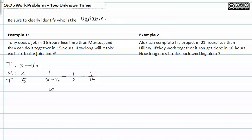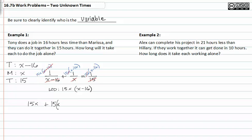We can now find the LCD, which in this case is fifteen x times (x minus sixteen). We multiply that through to each term in the equation, then divide out the common factors. This allows us to clear the fractions, giving us: fifteen x plus fifteen times (x minus sixteen) equals x times (x minus sixteen).